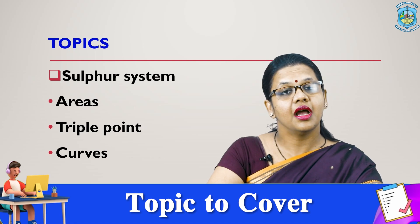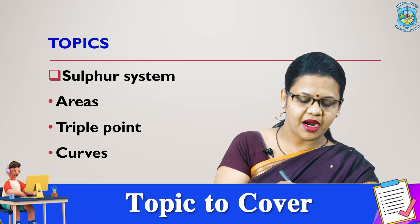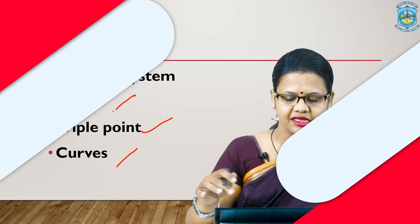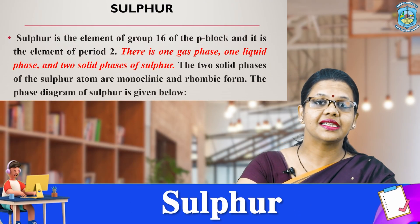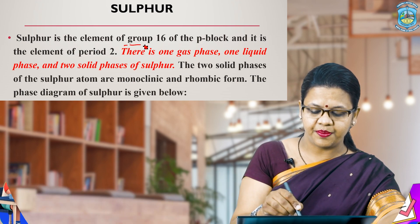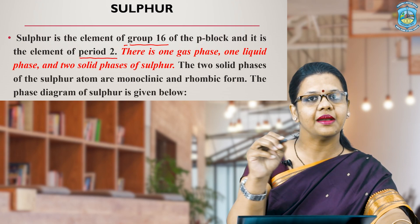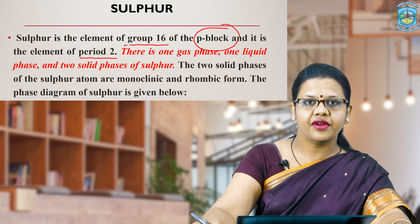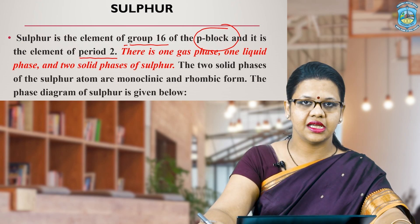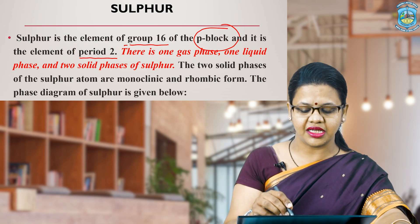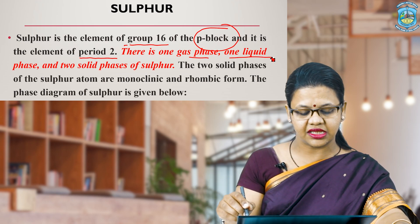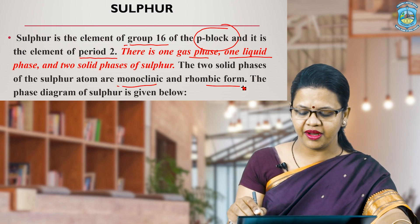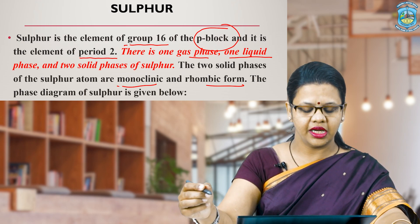Today we will be discussing the sulphur system, under which we will see the three important parts which we talk about in the phase rule — that is areas, triple points, and curves which appear in the sulphur system. Sulphur is an element present in the sixteenth group of the periodic table; it comes under the second period, and it is a p-block element. Sulphur is present in four different forms in nature: the gaseous form, one in the liquid state, and two forms are the solid phase — which are monoclinic and rhombic — the most stable forms found in nature.